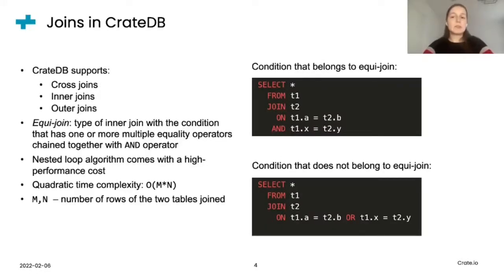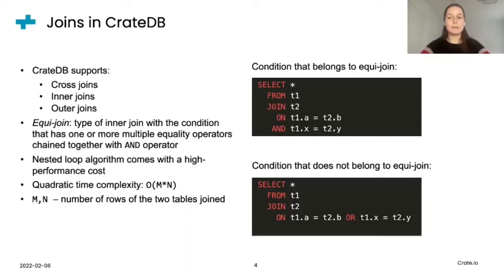In general, CrateDB supports all types of joins: cross joins, inner joins, and outer joins. The focus of this talk, as I already mentioned, is on equijoin, defined as a type of inner join with a condition that has one or more equality operators chained together with AND. The first query on the right side of this slide shows a condition that belongs to equijoin — two equality operators are chained with the AND operator. The second query shows a condition that does not belong to equijoin, where two equality operators are combined with the OR operator.